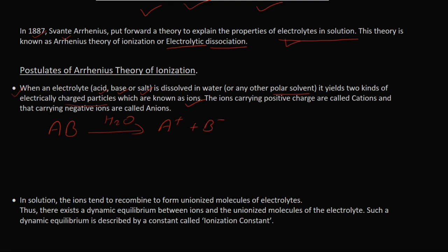You can see there is a positive charge and a negative charge being formed out of this electrolyte. The positively charged ion is called a cation and the negatively charged ion is called an anion.